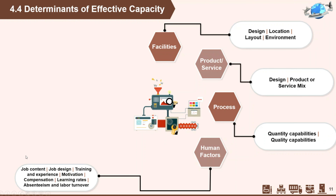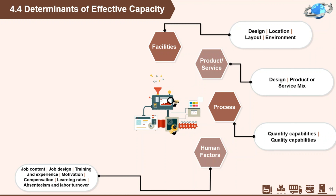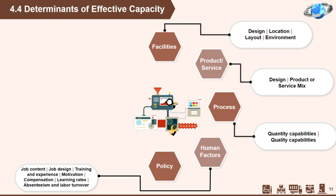Next, human factors. The tasks that make up a job, the variety of activities involved, and the training, skill, and experience required to perform a job all have an impact on the potential and actual output. In addition, employee motivation has a very basic relationship to capacity, as do absenteeism and labor turnover. Next, policy factors — management policy can affect capacity by allowing or not allowing capacity options such as overtime or second or third shifts.